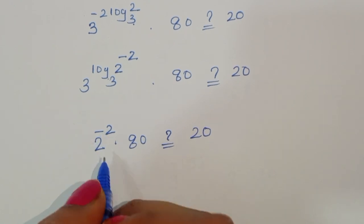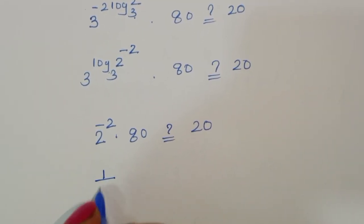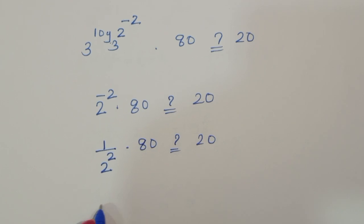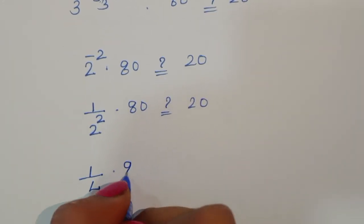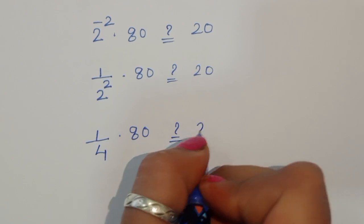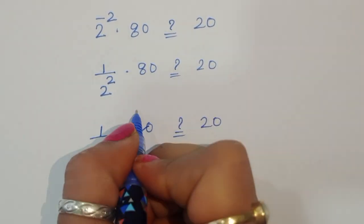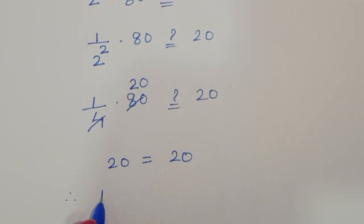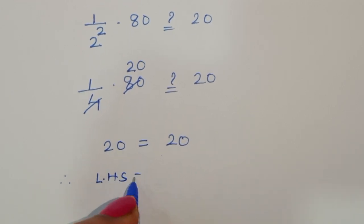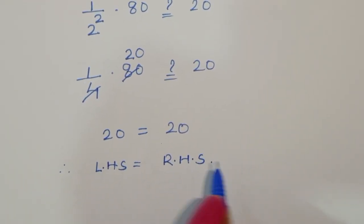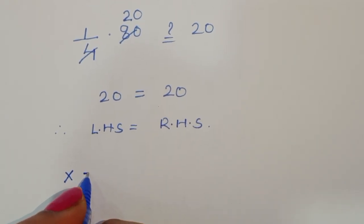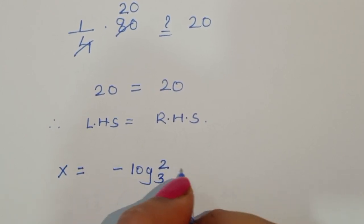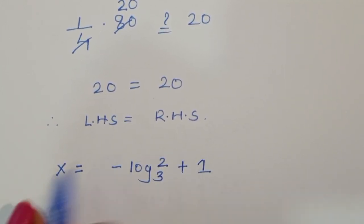This equals 2 power minus 2, which is 1 over 2 squared, so 1 over 4. Therefore 1/4 times 80 equals 20. Since 80 divided by 4 equals 20, we get 20 equals 20. Therefore LHS equals RHS. So the value of x equals minus log base 3 of 2 plus 1. This is the correct solution.